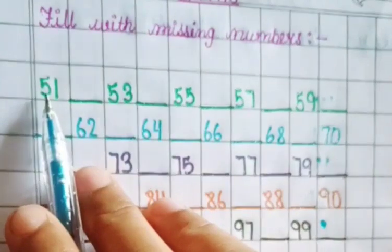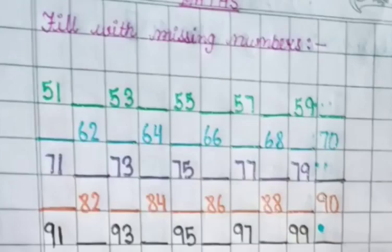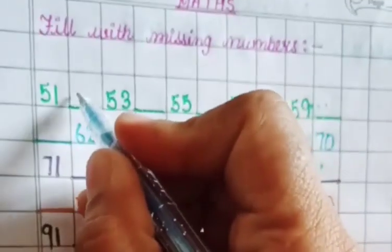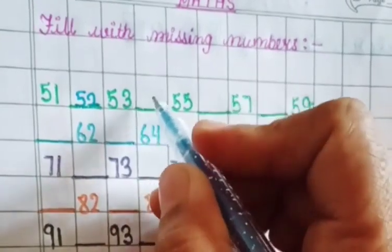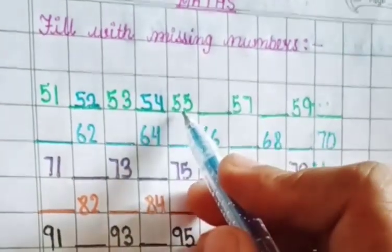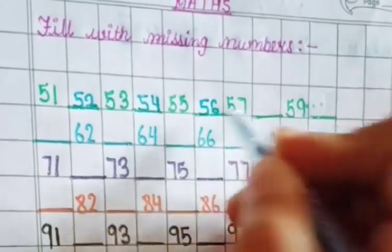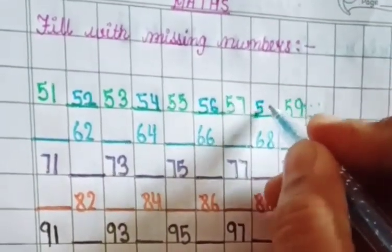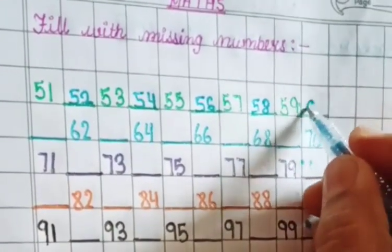So let's start. Here is 51, 52, 53. Then what will happen? 54, 55, 56, 57. Now you write 58, 59, 60.